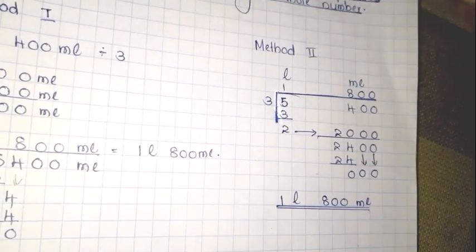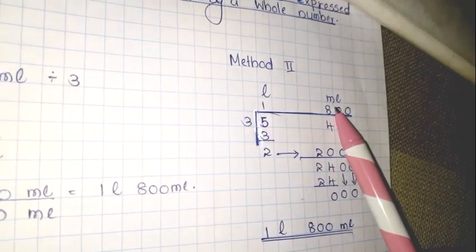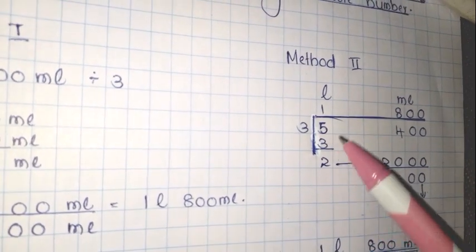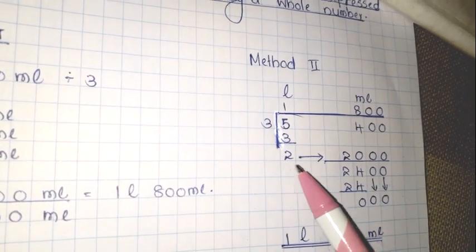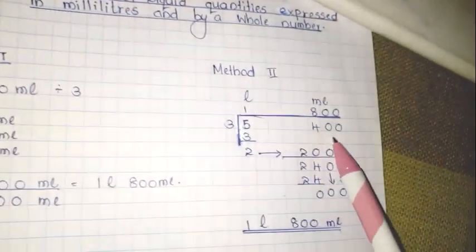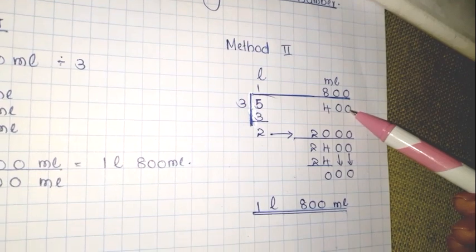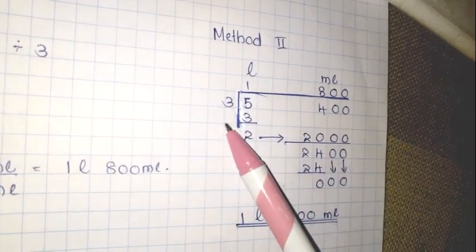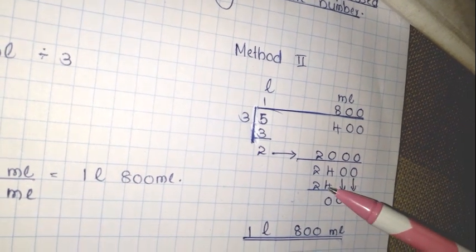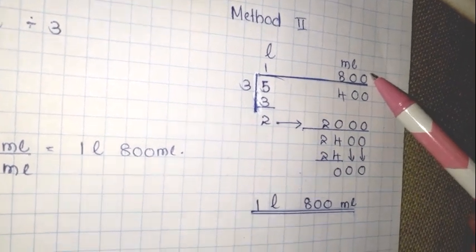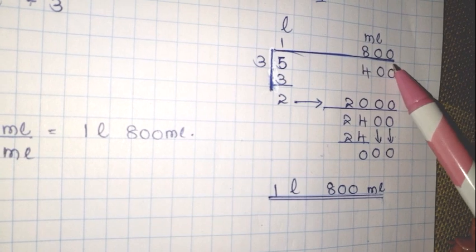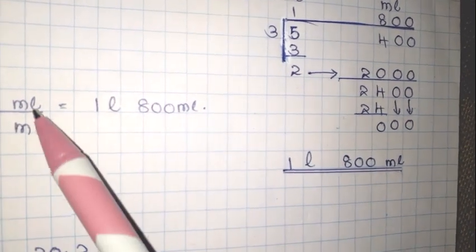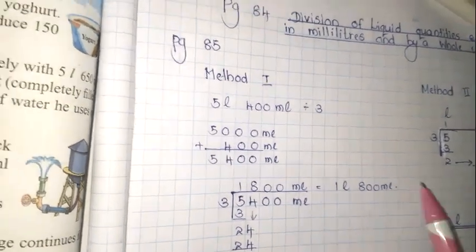Method 2 — write litres and millilitres separately: 5 litres 400 millilitres divided by 3. Dividing 5 litres by 3 gives 1 litre with remainder 2 litres. Convert the 2 litres to 2000 millilitres and add the 400 millilitres already given: 2400 millilitres. 2400 ÷ 3 = 800 millilitres. Answer: 1 litre and 800 millilitres — the same answer by both methods. Method 1 is easier to follow, but you can use any method you like.